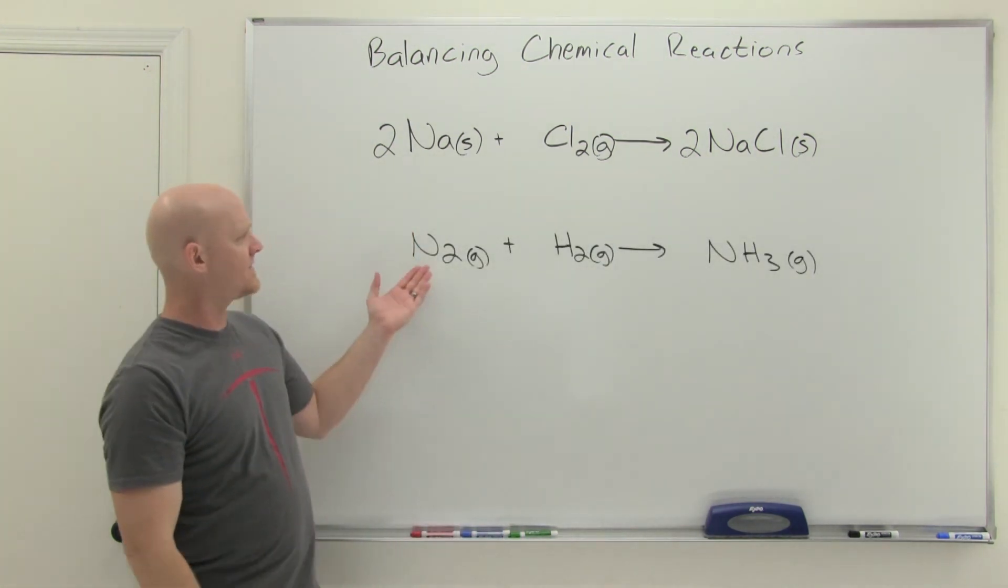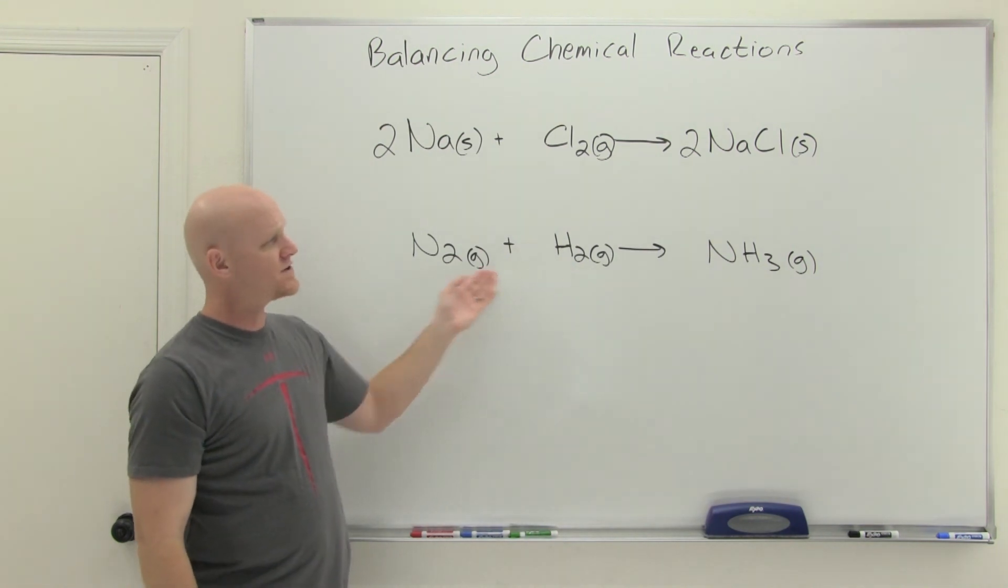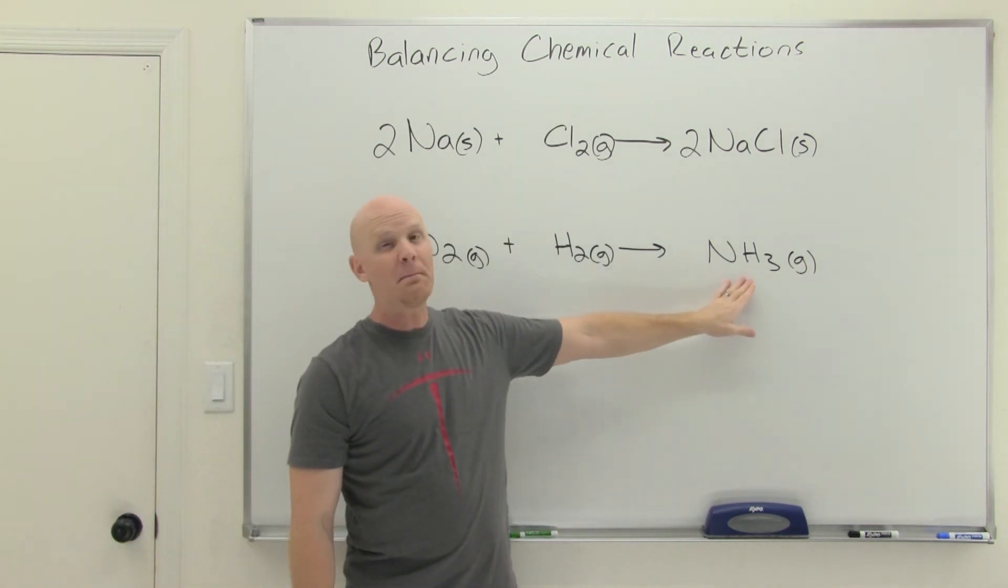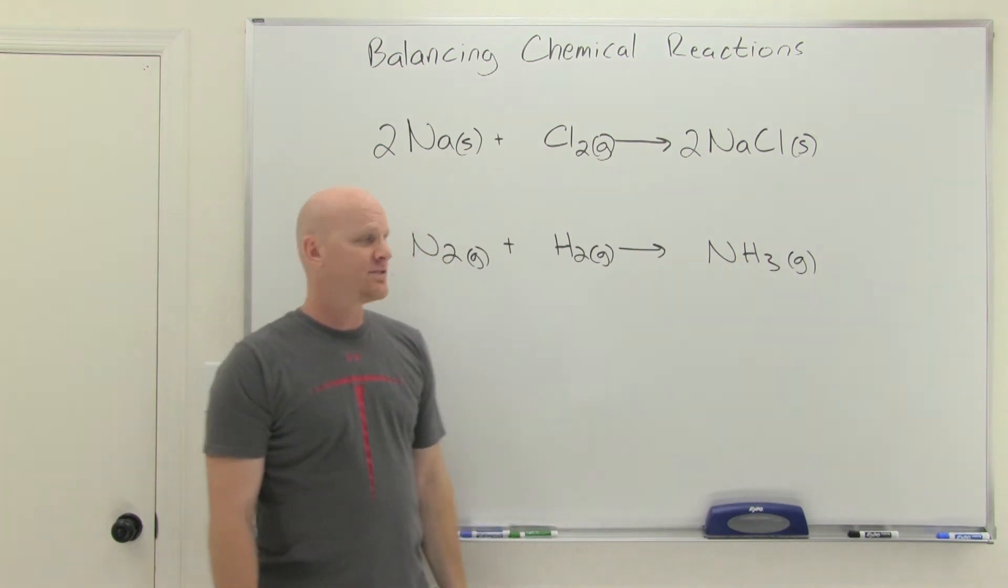All right, in this next one, we're going to balance. We're going to mix N2 gas with H2 gas, two of our diatomic elements, to produce ammonia gas. The NH3 here is called ammonia.